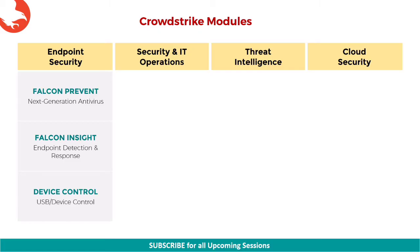The next module is Falcon Device Control, which enables safe and accountable usage of USB devices across your organization. Using one lightweight agent, it uniquely combines visibility and granular control, allowing IT and security administrators to ensure that approved USB devices are used appropriately. When used with Falcon Insight, visibility is extended, adding searchable history and logs of USB device usage, including files written to devices.